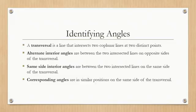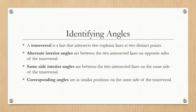Alternate interior angles are between the two intersecting lines on opposite sides of a transversal. Same-side interior angles are between the two intersected lines on the same side of the transversal. Corresponding angles are in similar positions on the same side of the transversal.